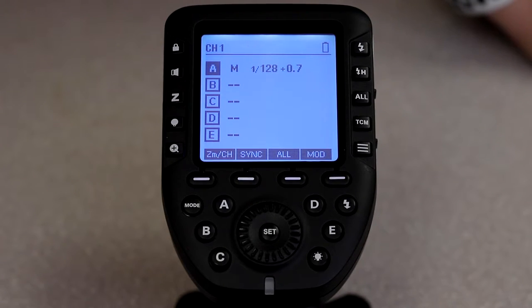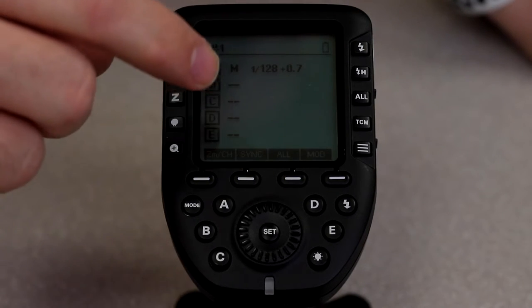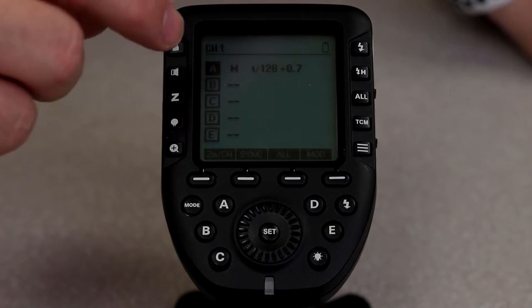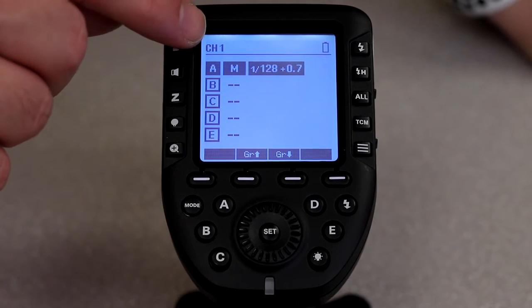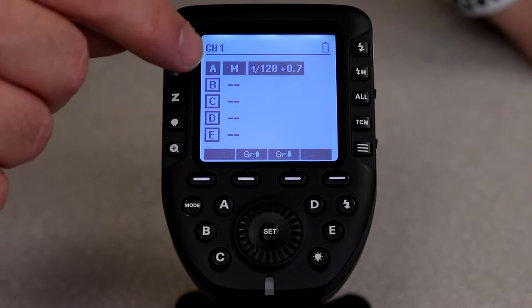But basically what we want to look at here is the most simplistic way to view it - we want to be able to use this to trigger a flash. Whenever we come in here we'll see there's a channel up here and then there's all these groups down here.